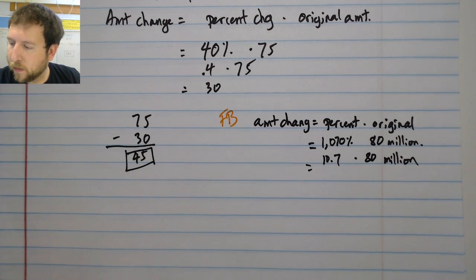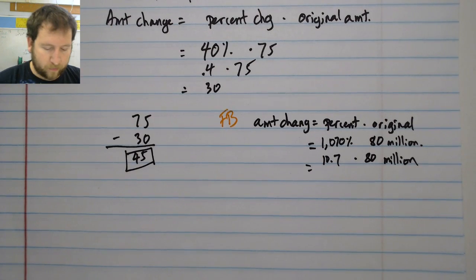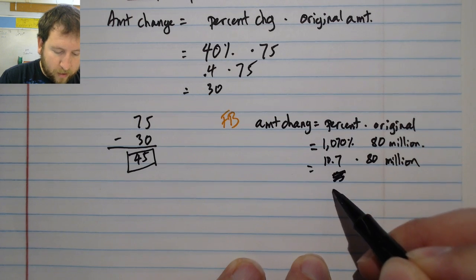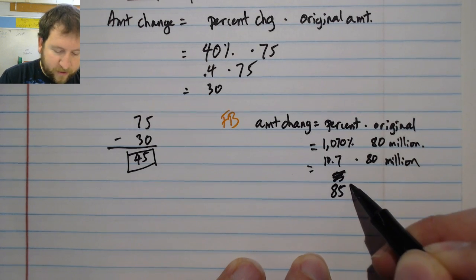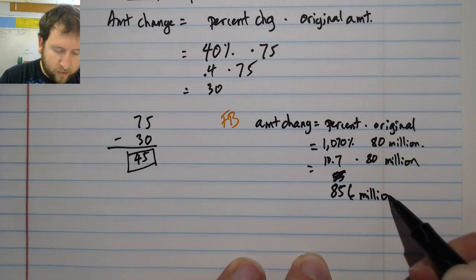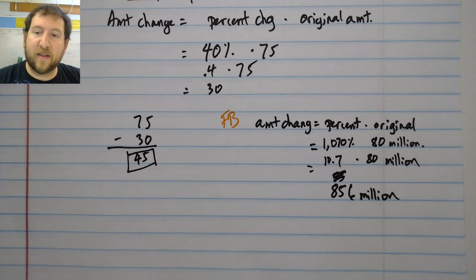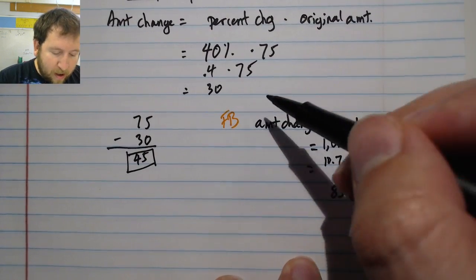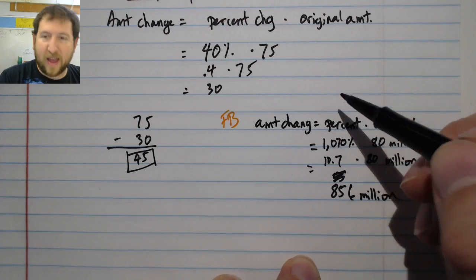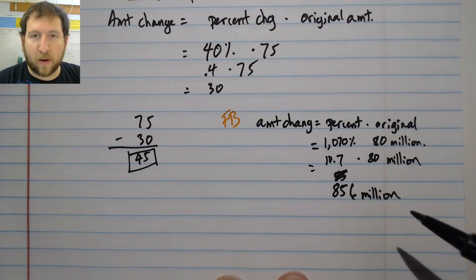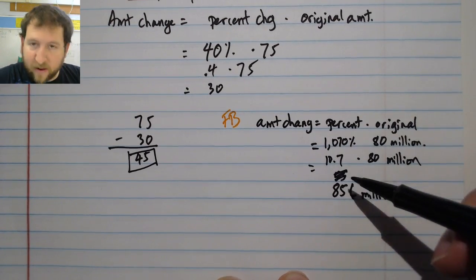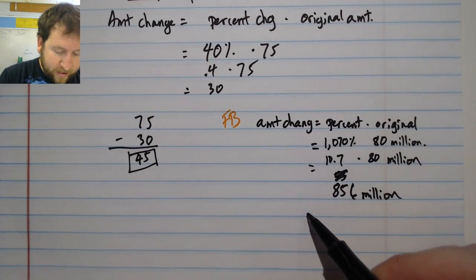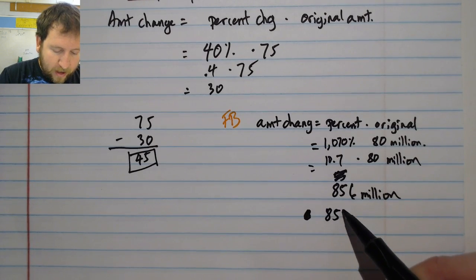10.7 times 80 is going to be 856 million. That is a significant change for sure. This was a plus though, because Facebook increased its total amount. Just like I did before, I'm going to need to add up my change that I found here as well as the amount that changed, so I'm going to do 856 million plus 80 million.